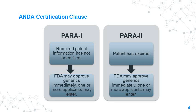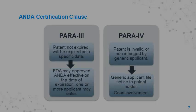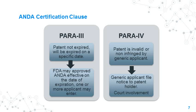As part of an ANDA, patent certification must be provided. Para 1 certification: the patent is not listed, in which case FDA may approve the generic drug immediately. Para 2 certification: the patent has expired, in which case the FDA may approve the ANDA effective on the date of expiration. Para 3 certification: the patent has not expired but shall expire on a specific date, in which case the FDA may approve the ANDA effective on the date of expiration and one or more applicants may enter later. A Para 4 certification is provided when the patent is invalid or non-infringed by the generic applicant, and there is usually court involvement.